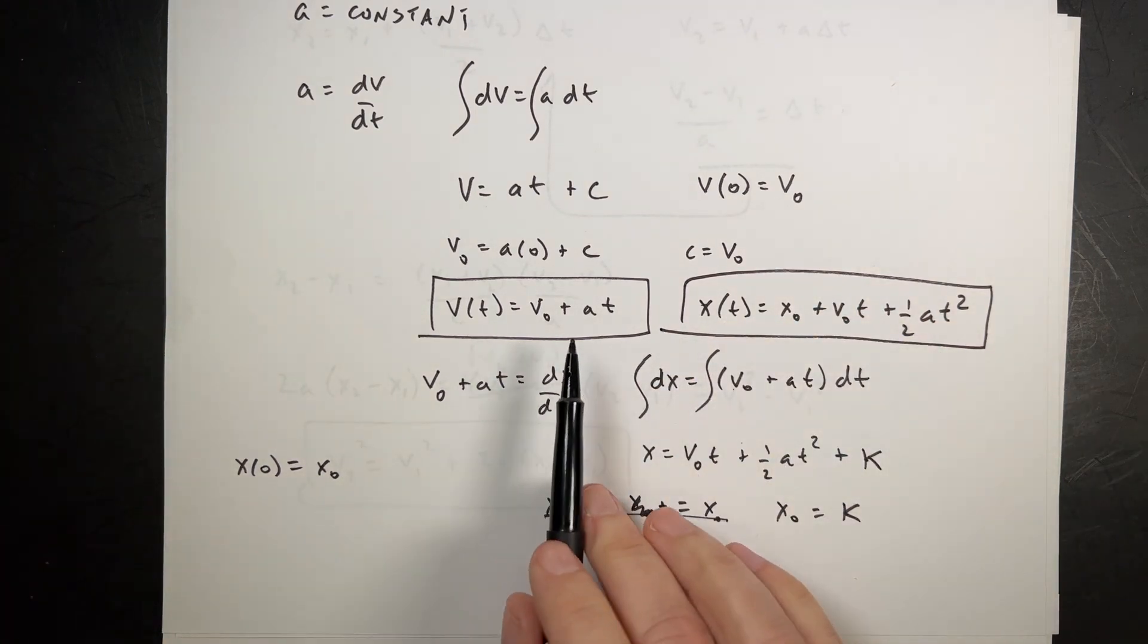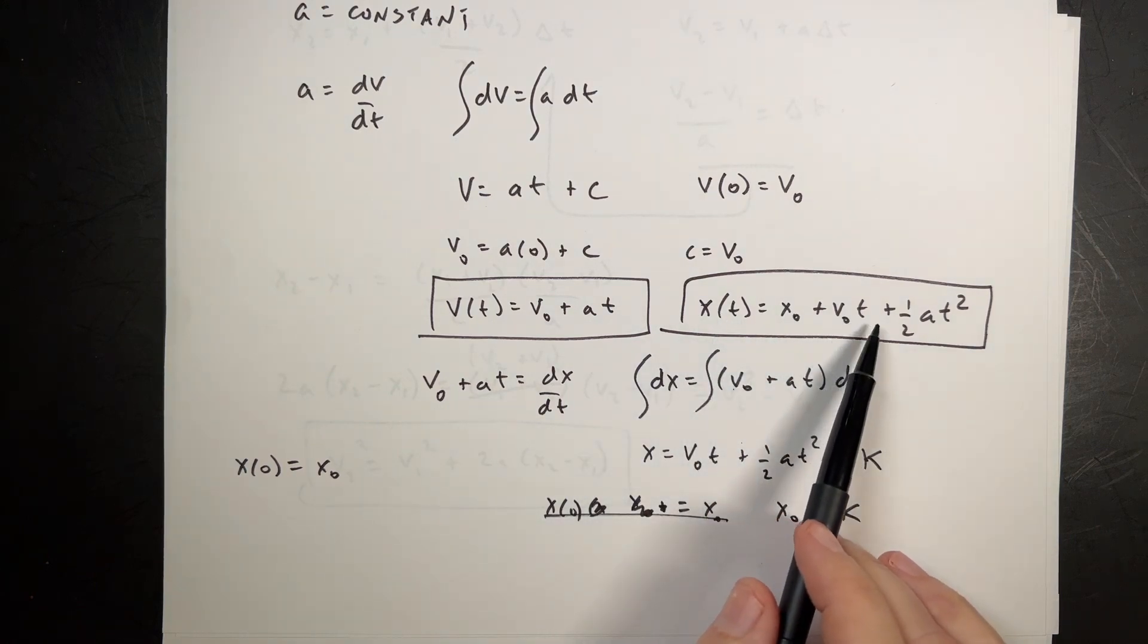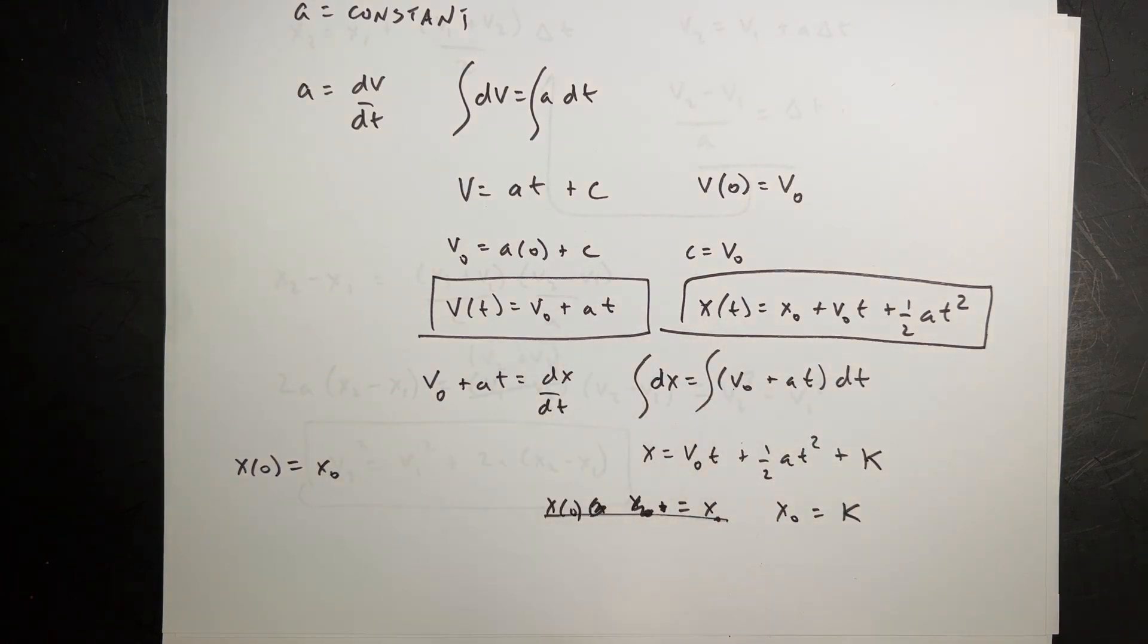I can use that same trick to get the other kinematic equation with the v0 squared. And I think that's good enough for one dimensional motion. Hope you enjoyed that. The playlist for the rest of the stuff will be down below if you made it this far.